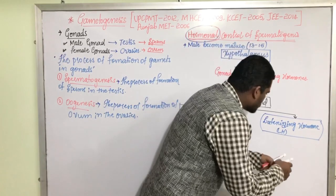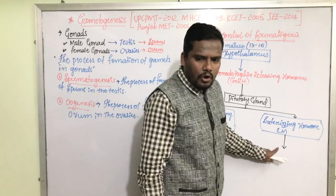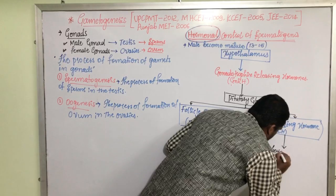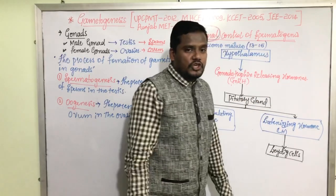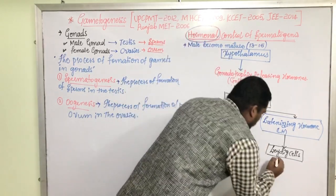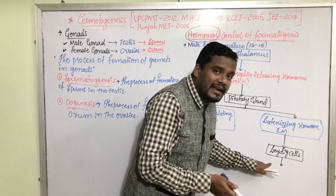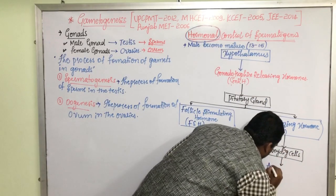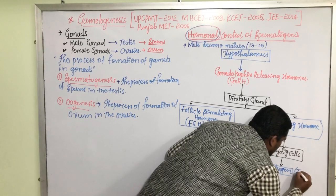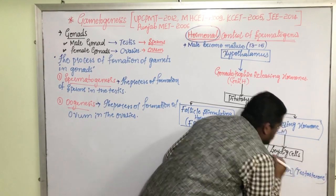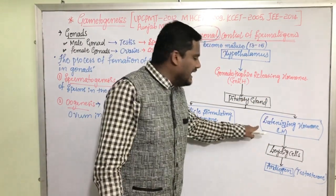LH generally acts on the Leydig cells, also called the interstitial cells of the testis. As a result, the Leydig cell produces another hormone — androgen, the male sex hormone, generally testosterone. Testosterone hormone is produced by the Leydig cells after being stimulated by LH.